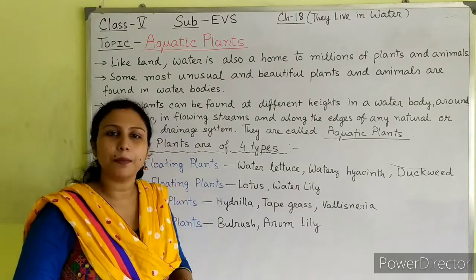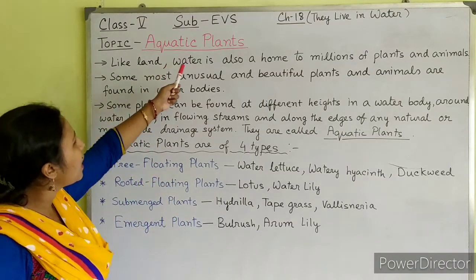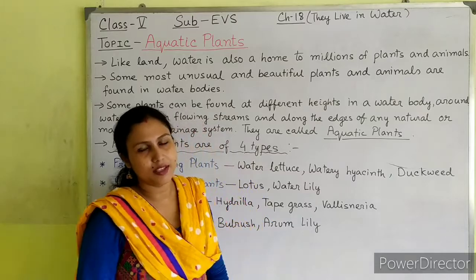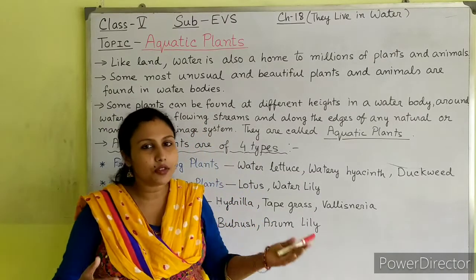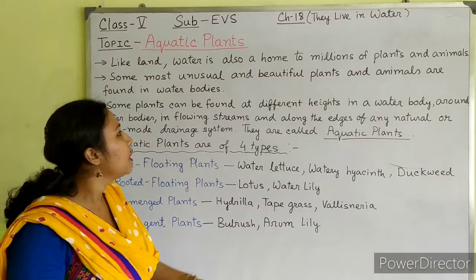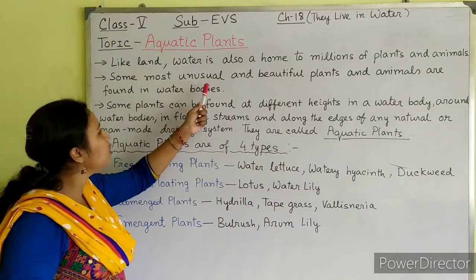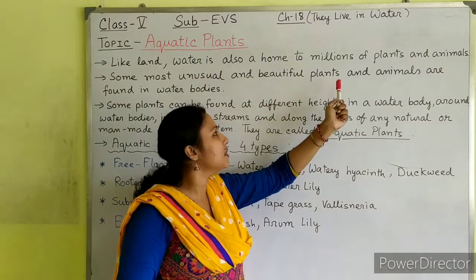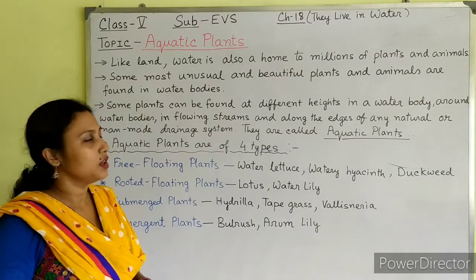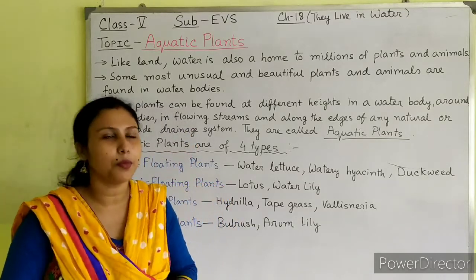Aquatic plants are the plants which grow in water. Like land, water is also a home to millions of plants and animals. Some most unusual and beautiful plants and animals are found in water bodies. Different types of beautiful plants and animals are found in water bodies.